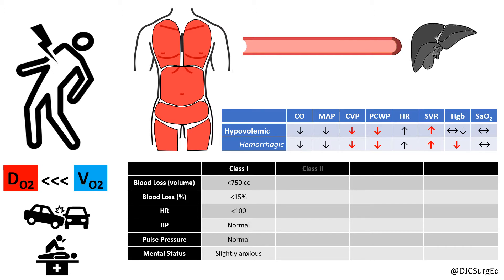Class 2 shock accounts for 750 to 1500 cc's of blood loss, or 15 to 30 percent of blood volume, and is associated with a narrow pulse pressure and mild tachycardia.